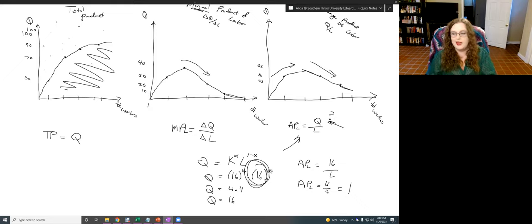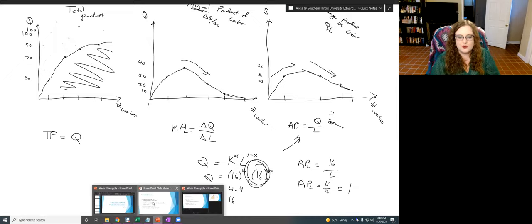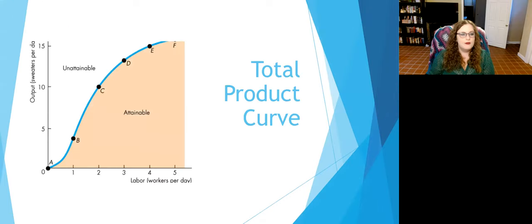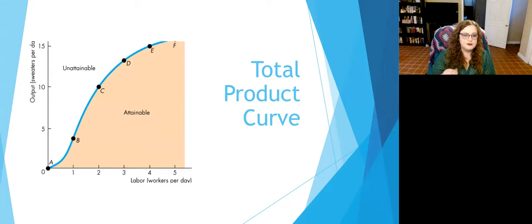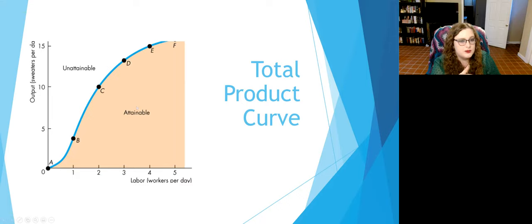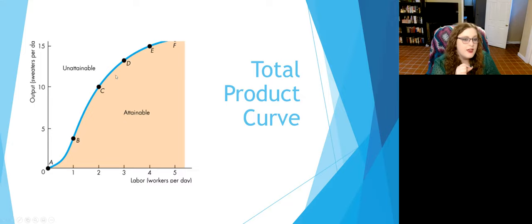Let's think about how total product and the marginal product curve connect. Everything inside the total product curve underneath the line is in the attainable zone — bundles we can produce but not maximizing all resources. To really maximize with three workers, maybe we should produce 12 sweaters. Everything outside that is unattainable. The marginal product just measures how much the total product changes as we add each additional worker.